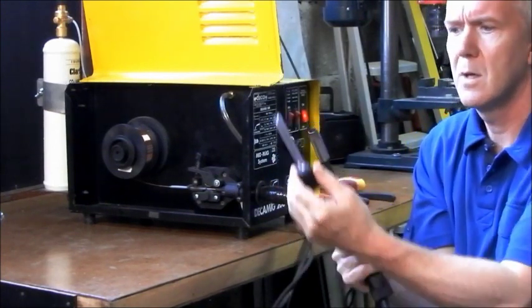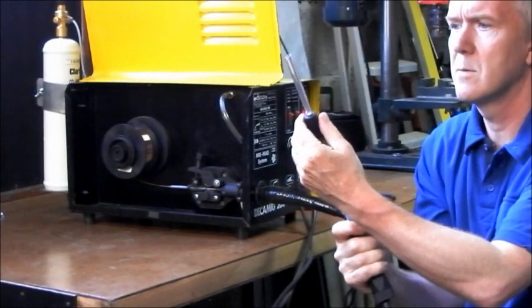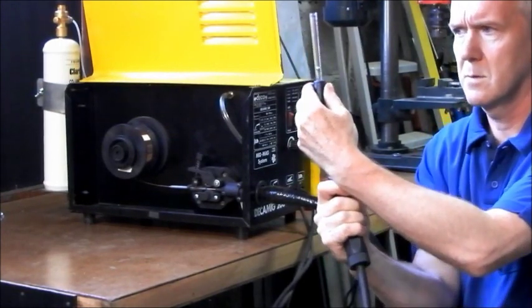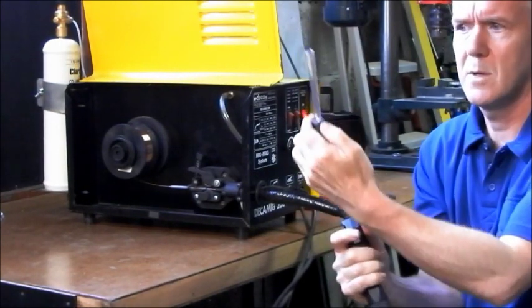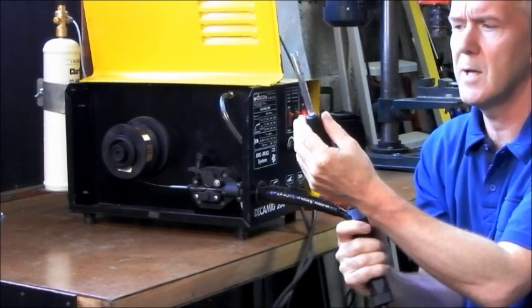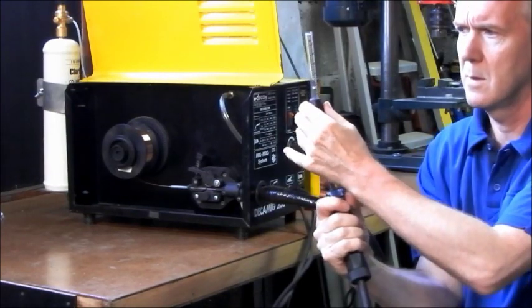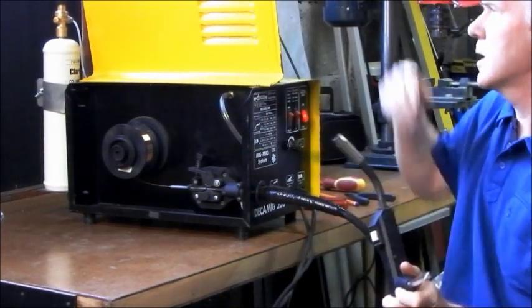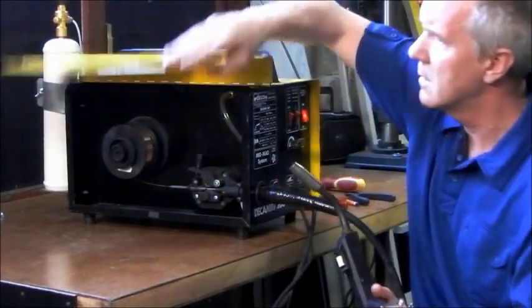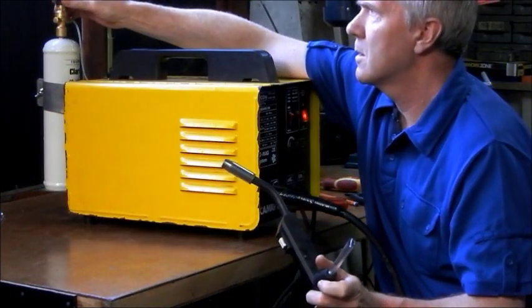Pull the trigger first, place the flow meter over the end of the gun. I'm just getting about just under 5 litres per minute there. That's too much gas, I'm wasting gas there. I don't need it. All I do is I turn it down.